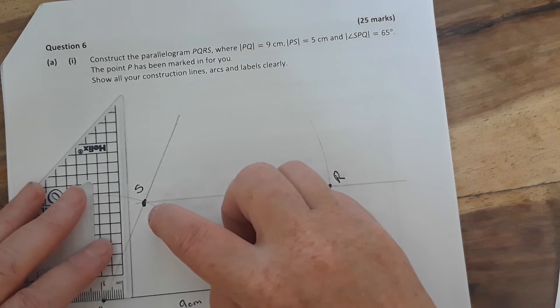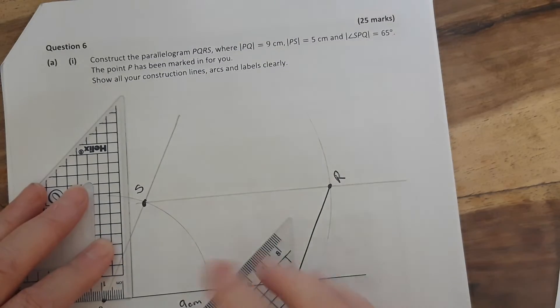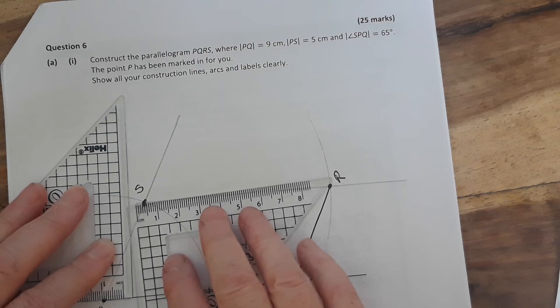The main thing is to remember when you get to this bit here to have your right angle going up and do slightly before the S, because they want to see all your construction lines, and to bring the right angle against it so that you're getting a perfect parallel line to this line.